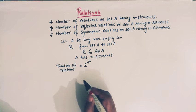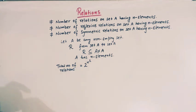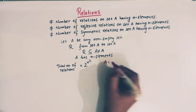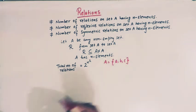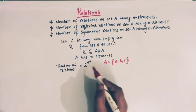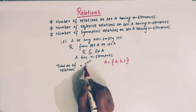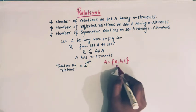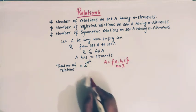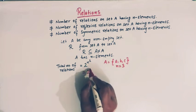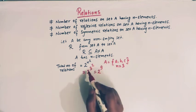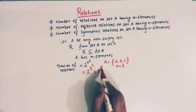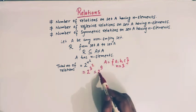For example, let us take a set A having 3 elements. The total number of relations from set A to set A is given by 2^n², and here n is 3. So the total number of relations will be 2 raised to 3 square, that is 2 raised to 9.